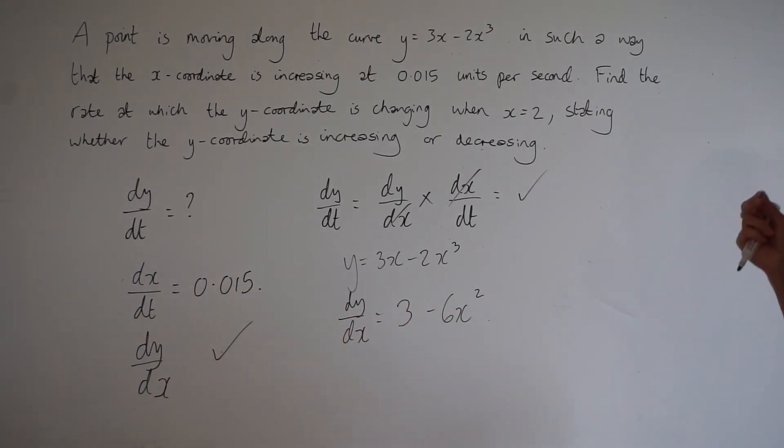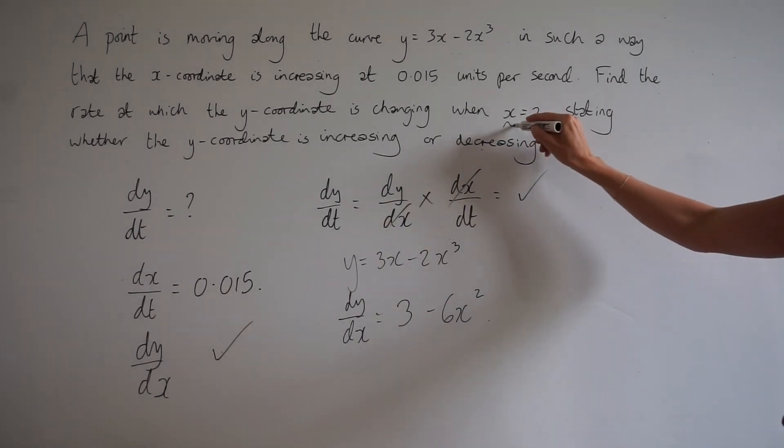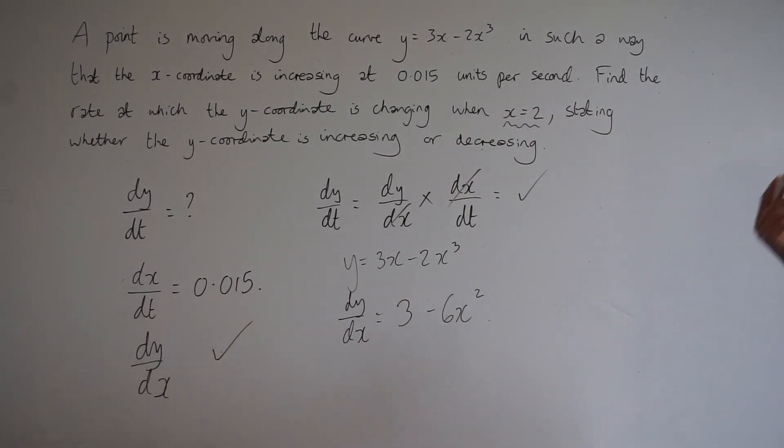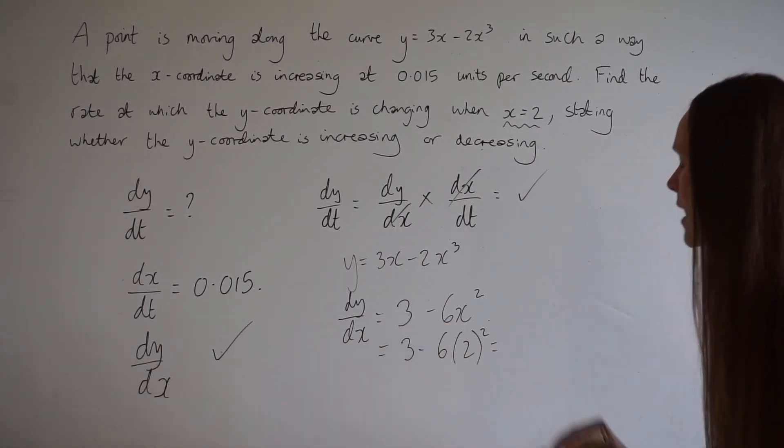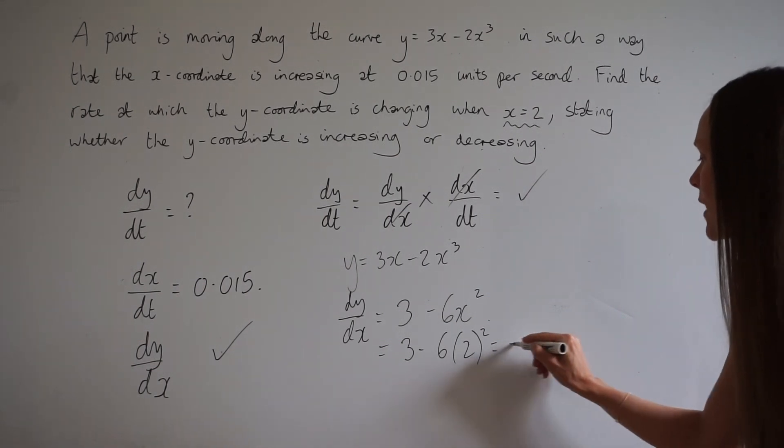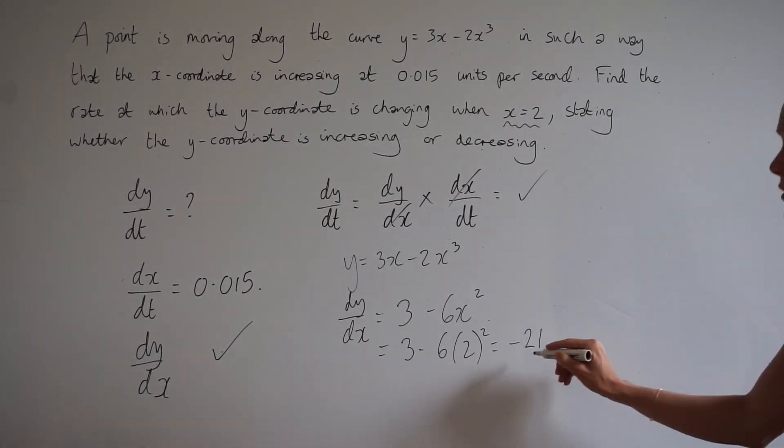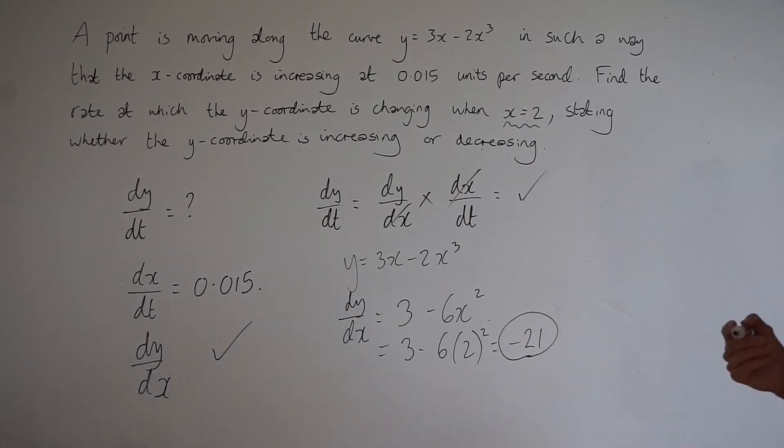Except we've been given a specific point. We have to find the rate at which the y coordinate is changing when x equals 2. So it's important that you substitute that value of x into the expression for dy/dx. I'm going to replace my x value with 2, and if you calculate this, you should find that it's negative 21. So that is dy/dx.